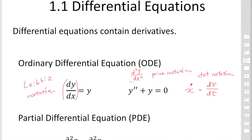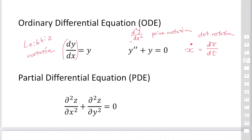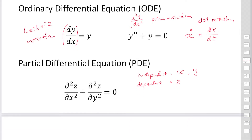Sometimes we have one or more dependent variables with respect to two or more independent variables. In this case, the independent variables are x and y, and the dependent variable is z. If the equation contains partial derivatives, it becomes a partial differential equation, abbreviated as PDE. The partial derivative with respect to x can also be expressed as z_xx — we call that subscript notation. This is how to express partial derivatives.